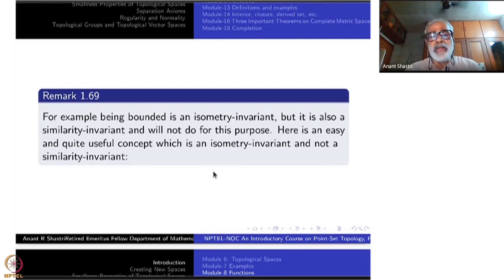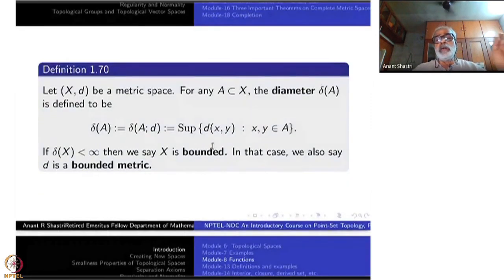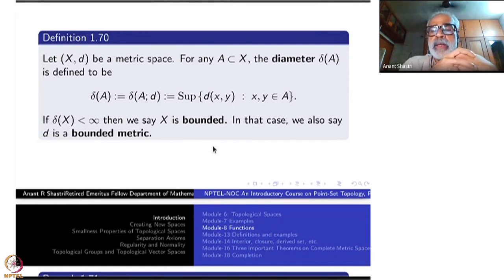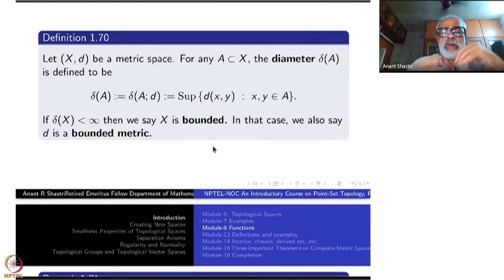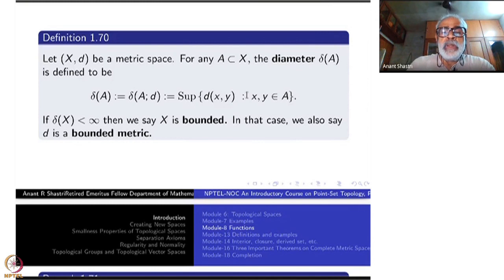Here is a concept that is an isometric invariant but not a similarity invariant — the diameter. Take a metric space and any subset A (which can be empty). The diameter of that subset A is defined as δ(A) or δ(A, d) — the supremum of all distances d(x, y) where x and y are arbitrary points of A.